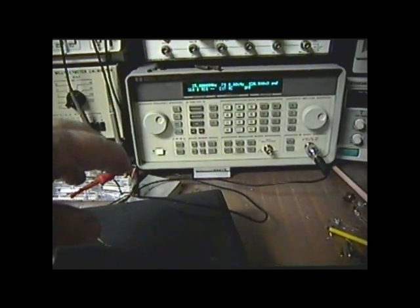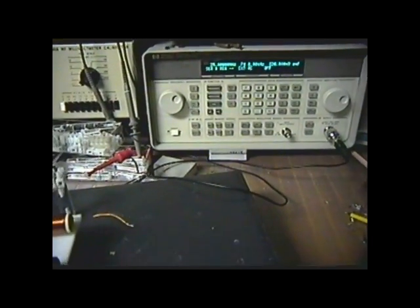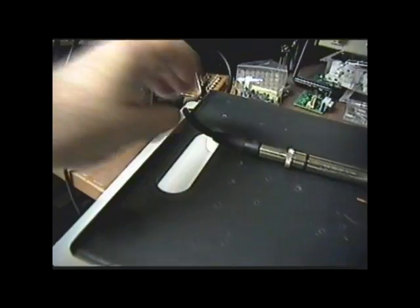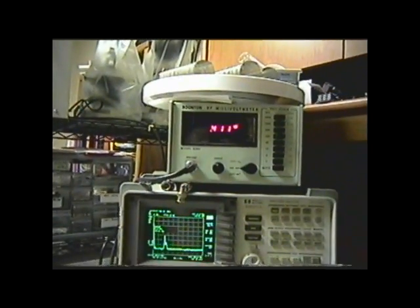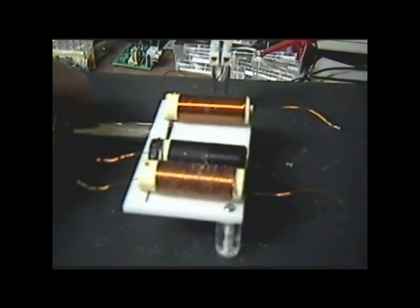With a signal generator that we can vary, and I'm going to vary it at 100 kilohertz increments. I'm using a Bouton RF voltmeter, and I've got the probe down here next to the coil.